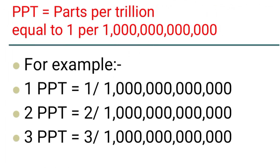For example, 1 ppt is equal to 1 upon 1 trillion. 2 ppt is equal to 2 upon 1 trillion. In the same way, 3 ppt is equal to 3 upon 1 trillion.